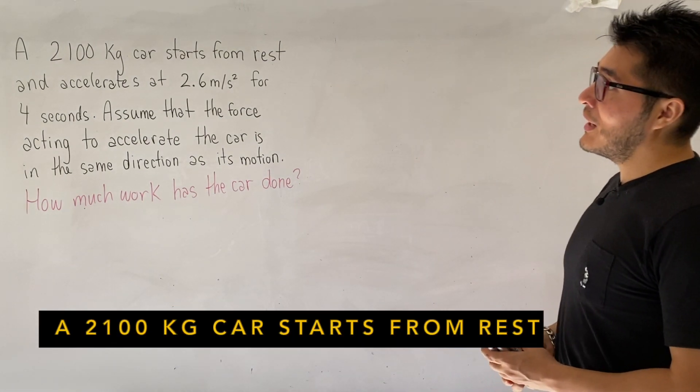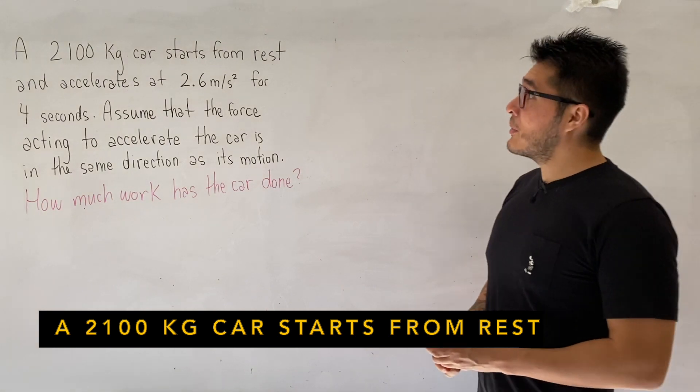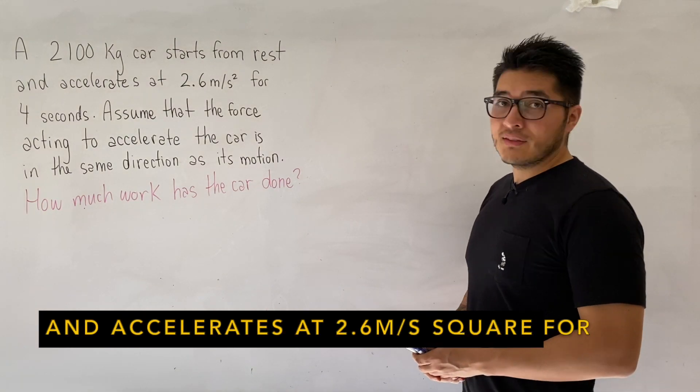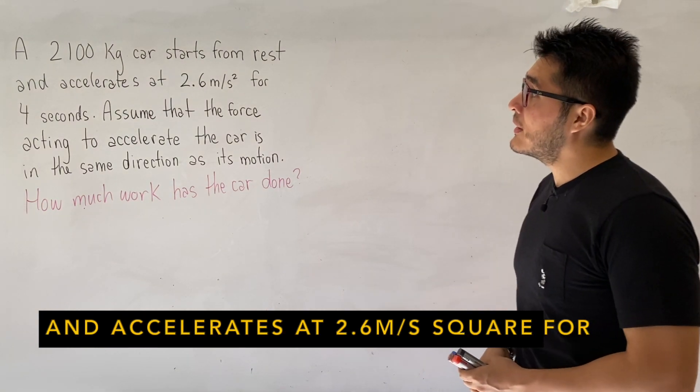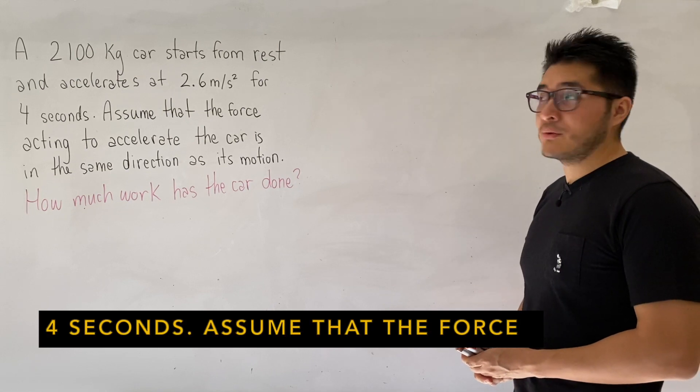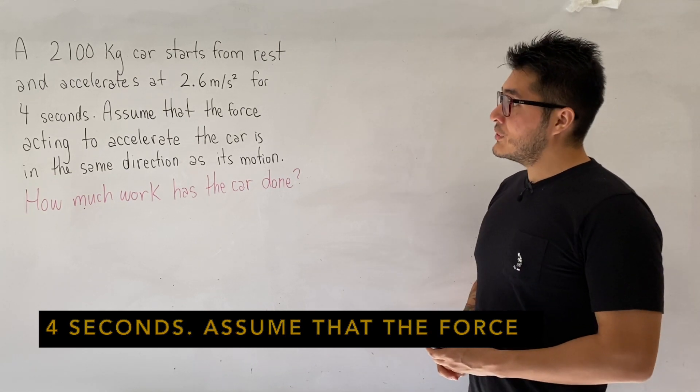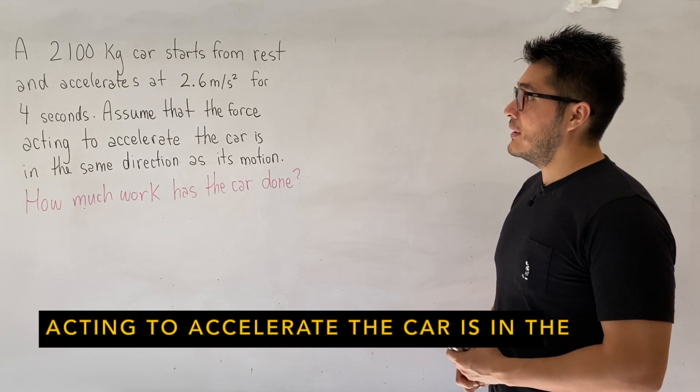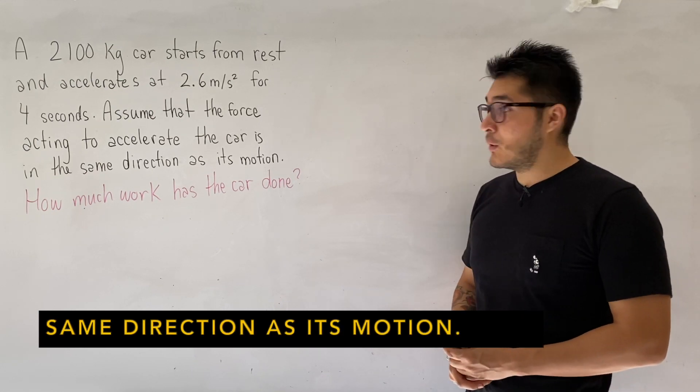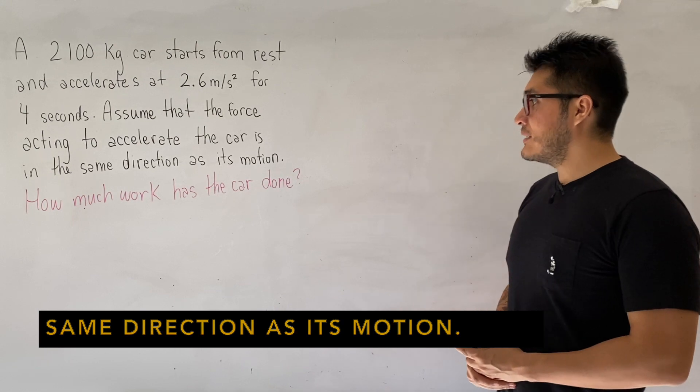So in this question here, we have a 2,100 kg car. It's starting from rest and it is accelerating at 2.6 m/s² for 4 seconds. Assume that the force acting to accelerate the car is in the same direction as its motion. How much work has the car done?